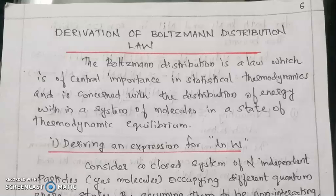Today, we are going to discuss the derivation of Boltzmann distribution law. The Boltzmann distribution is a law of central importance in statistical thermodynamics, concerned with the distribution of energy within a system of molecules in a state of thermodynamic equilibrium. The most important law in statistical thermodynamics is the Boltzmann distribution law.